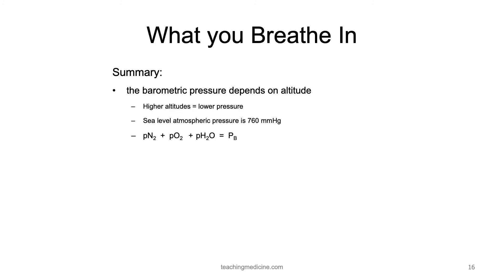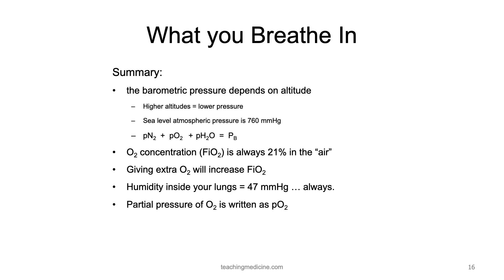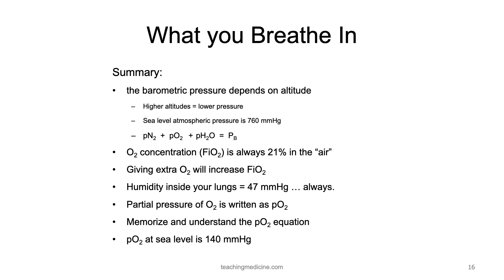In summary: barometric pressure depends on altitude — higher altitudes have a lower pressure, and sea level atmospheric pressure is 760. All of the molecules in the air — nitrogen, oxygen, and water — must add up to the atmospheric pressure. Oxygen concentration, or FiO2, is always 21% in ambient air; giving extra oxygen will increase the FiO2. The humidity inside your lungs is always equal to 47 millimeters of mercury. The partial pressure of oxygen is written as PO2. It's very important to memorize and understand the PO2 equation and to appreciate that the PO2 at sea level is 140 millimeters of mercury.